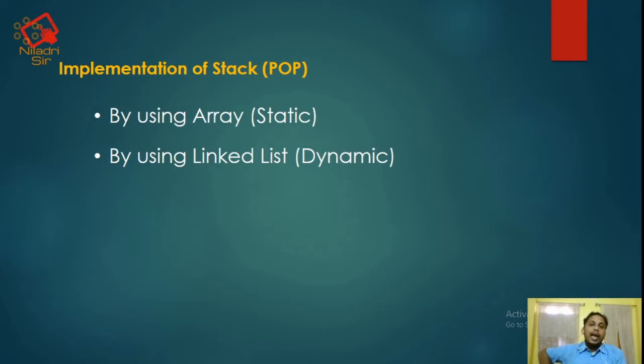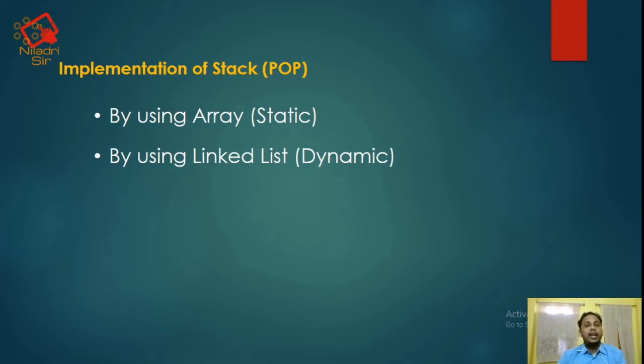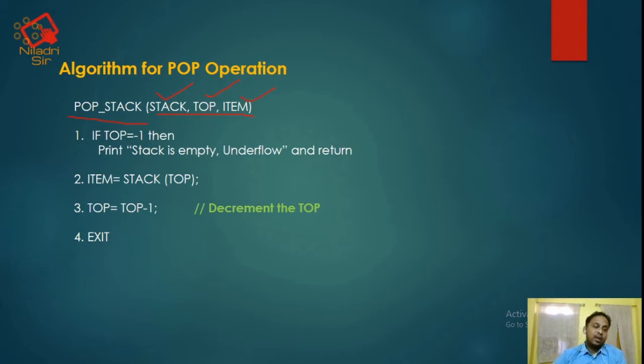Now we will learn the POP operation using Array. Array is basically a collection of similar type of data elements. In Array, all the elements are initialized and memory is allocated before compile time. After compile time, we cannot insert any element. This is the algorithm for POP operation. You can see this is the function pop_stack — this is the stack, this is the top, and this is the item. These are all the parameter list.